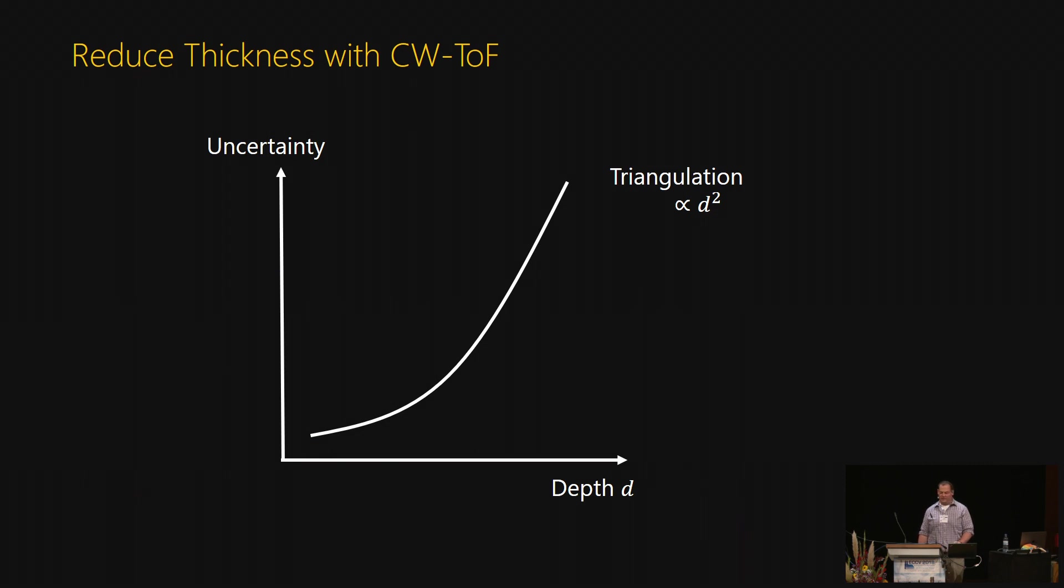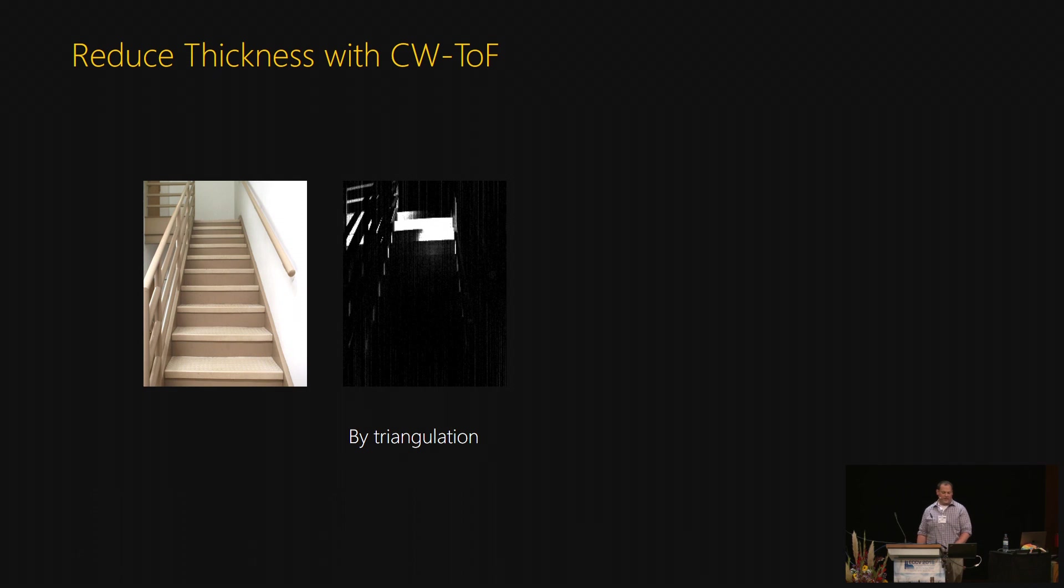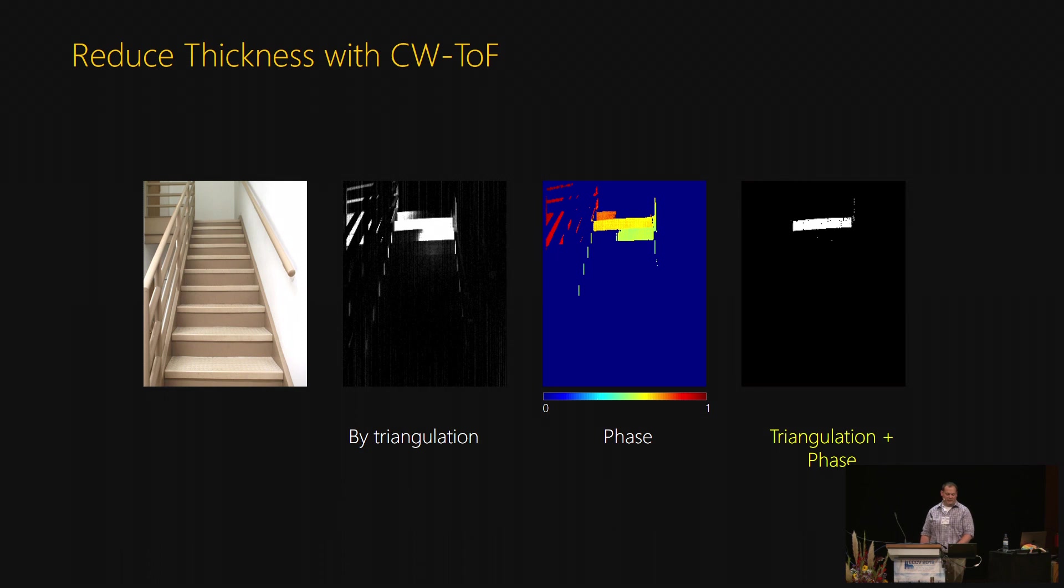We can make the curtain thinner by replacing the line intensity camera with a continuous wave time-of-flight camera. Unlike triangulation uncertainty, continuous wave time-of-flight uncertainty is constant, and it is inversely proportional to its modulation frequency. So by using a continuous wave time-of-flight sensor with a high modulation frequency, we can reduce the uncertainty significantly. By combining triangulation and time-of-flight, we can always have a small uncertainty. Let's look at that stair scene again. Before with triangulation only, three stairs were detected. But now, when combined with phase data, only one stair is detected.